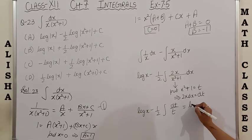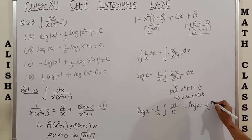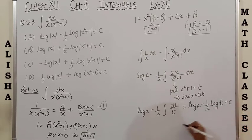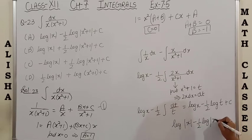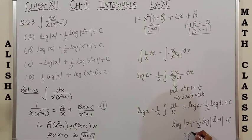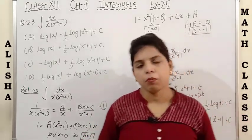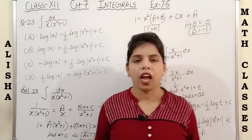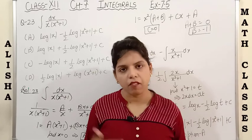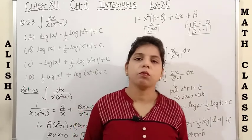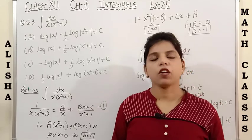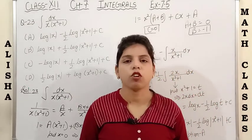Putting x²+1 = t, so 2x dx = dt. The integral becomes log x − (1/2) log t + C, which is log x − (1/2) log(x²+1) + C. The correct answer matches option A. So students, we have now discussed all the topics of Exercise 7.5 and how to solve partial fraction questions in a simple manner. I hope you liked the video and that the tricks will help you in your board exam. Please like, share, and subscribe. Thank you for watching Alisha Mayas Classes.